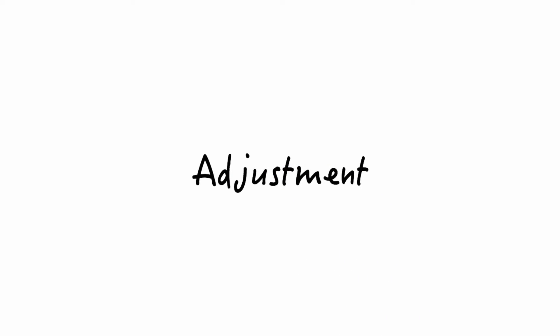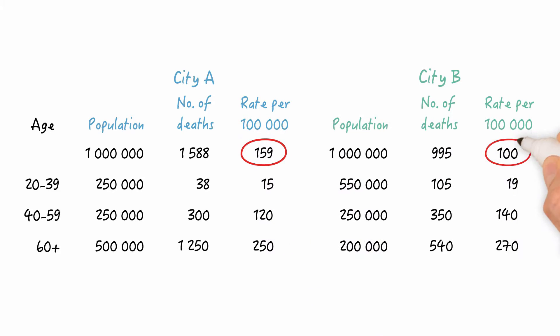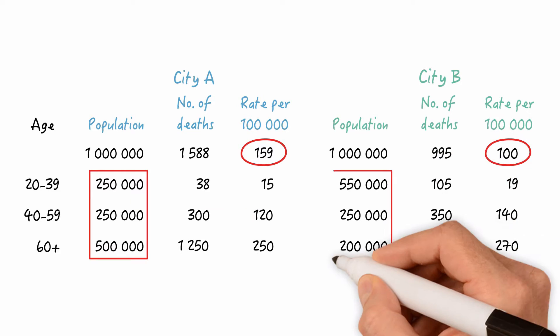Let's go back to a previous example of death rates in cities A and B. Remember, the overall death rate was higher in city A due to its older age distribution, whereas the age stratified mortality rates were actually higher in city B. So the risk of death is really higher in city B.